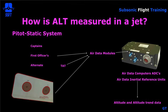How is altitude measured in a jet? It's measured with a pitot-static system — specifically the static part. In large jets, there are usually three systems: one for the captain, one for the first officer, and an alternate pitot-static system. The static pressure from the static port sends raw data to the air data modules, which digitize that information and send it to either the air data computers or the ADIRUs, depending on the airplane. That information is then displayed as altitude and altitude trend data for the pilot.